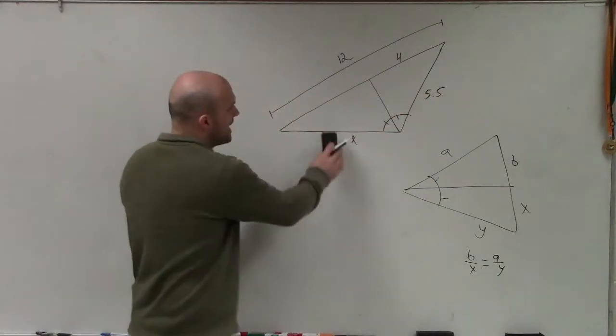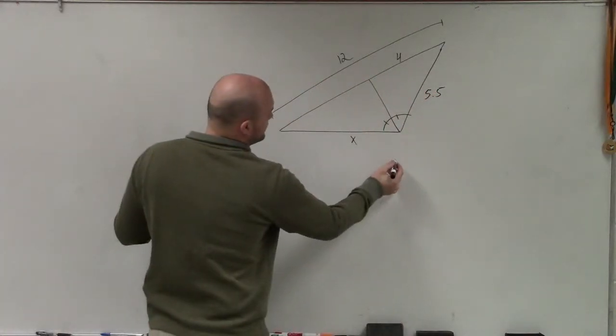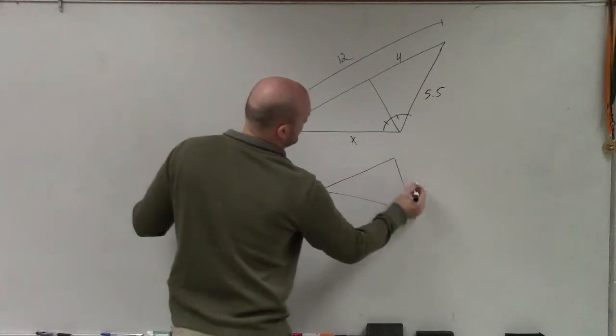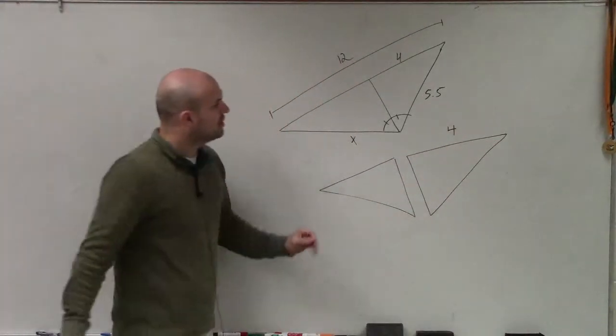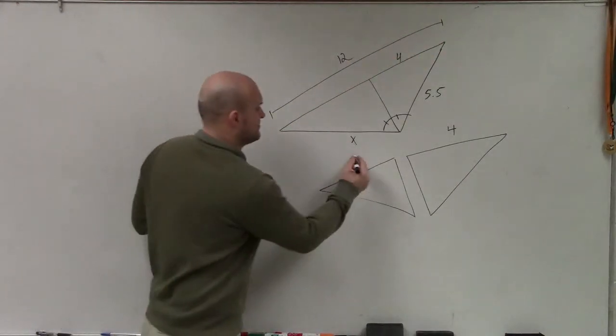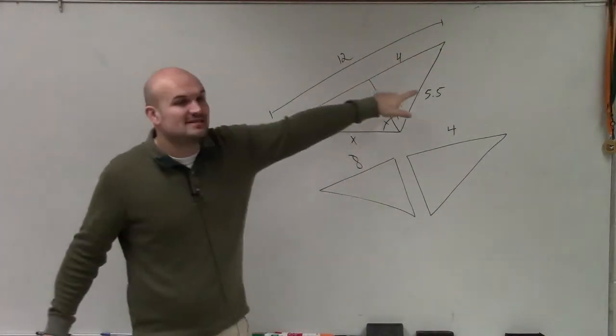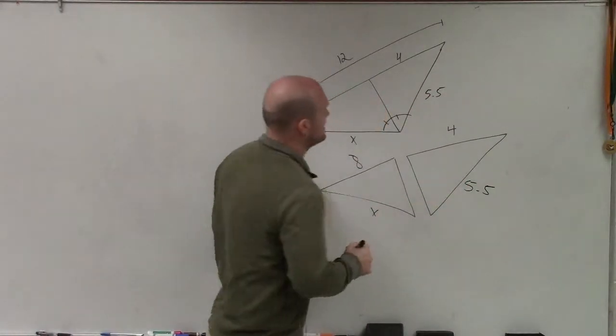So what I can literally do now is break this apart, if I want to, into two different triangles. So if this is 4 and the whole length is 12, what does this have to be? 8. If this is 5.5, and that's x.